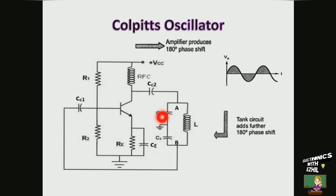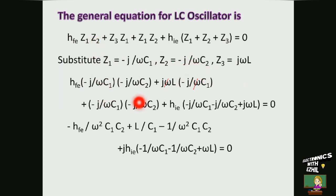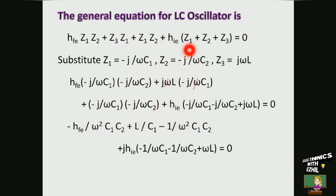As discussed, in Colpitts oscillator, Z1 and Z2 are capacitors and Z3 is an inductor. Substituting Z1 equal to −j/ωC1, Z2 equal to −j/ωC2, and Z3 equal to jωL into the general expression: H(E) is written as is. For Z1, −j/ωC1 is substituted; for Z2, −j/ωC2 is substituted; and Z3 is replaced by jωL. Z1·Z2 becomes (−j/ωC1)·(−j/ωC2), and H(E)·Z1, Z2, Z3 terms are substituted accordingly.